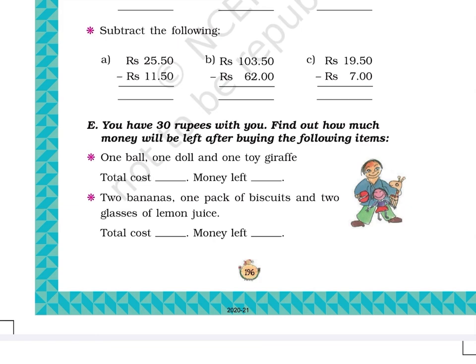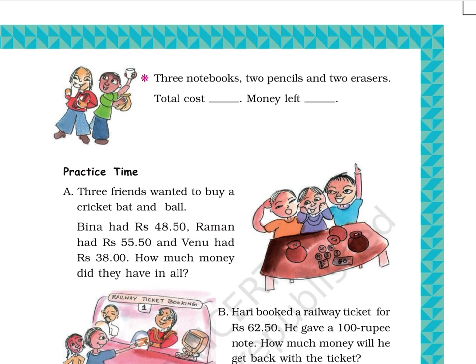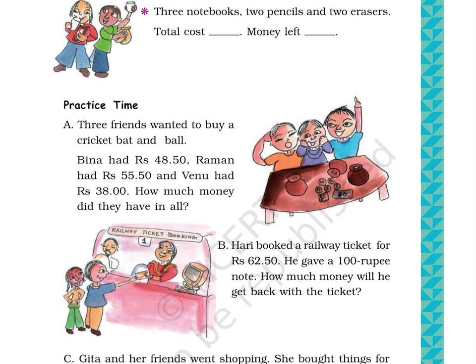Page 197, question continues from previous page. Part C: Three notebooks, two pencils, and two erasers. Total cost: ___. Money left: ___. This concludes Chapter 14 Rupees and Paise, Part 2, of the total 14 chapters of the book.